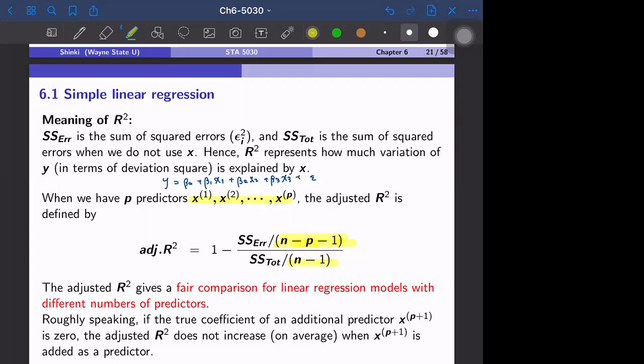So in such a case, R-square isn't really a good measure for overall fit. So we make the denominator, this n-p-1, smaller when p is larger,